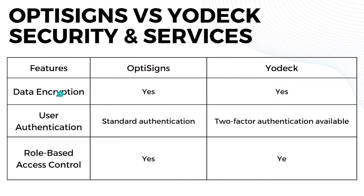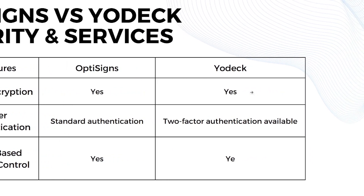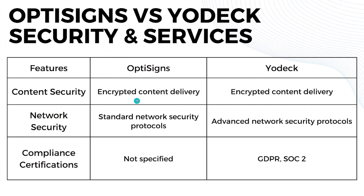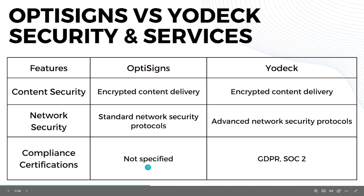Now for security and services. Both platforms provide data encryption. For user authentication, OptiSigns has standard authentication while Yodeck offers two-factor authentication. Both platforms support role-based access control and encrypted content delivery. For network security, OptiSigns offers standard protocols while Yodeck has advanced network security protocols. For compliance certifications, OptiSigns has not yet specified theirs, while Yodeck holds GDPR and SOC 2 compliance certification.